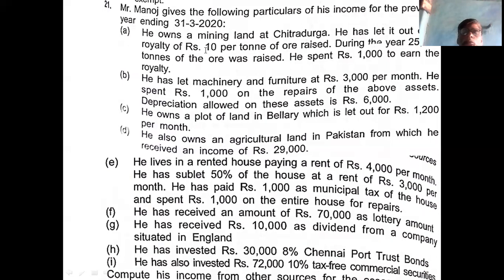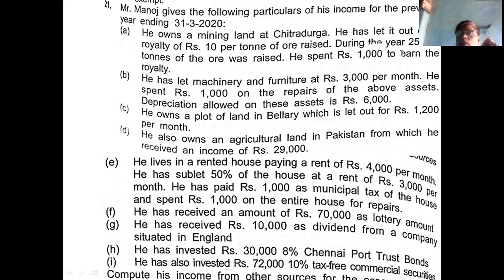Exercise number 21: From the following income of Mr. Manoj for the previous year ending 31st March 2020, compute the income from other sources. The first point is he owns a mining at Chitradurga and let it out on a royalty of 10 rupees per ton of ore raised. During the year 25,000 tons of ore was raised, so 25,000 into 10 is 2,50,000 total royalty. The allowable expense is 1,000.